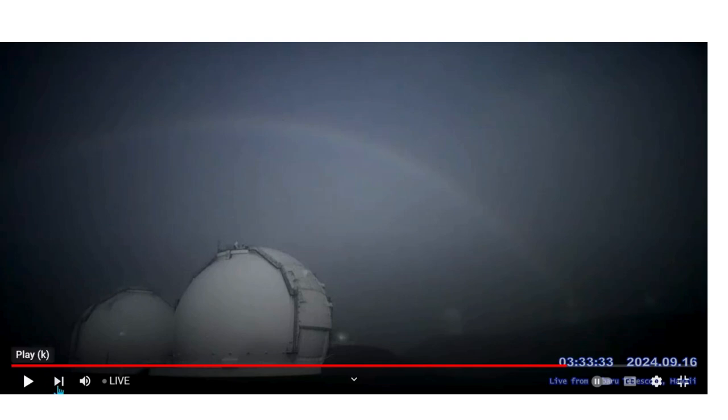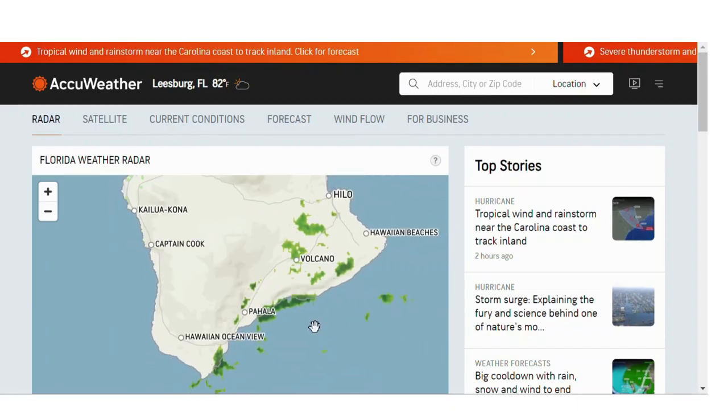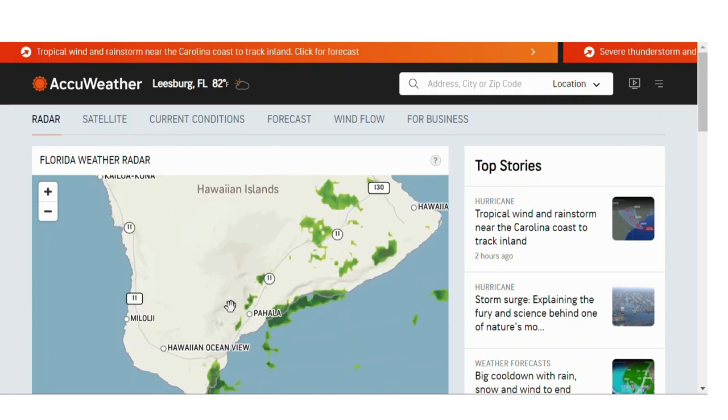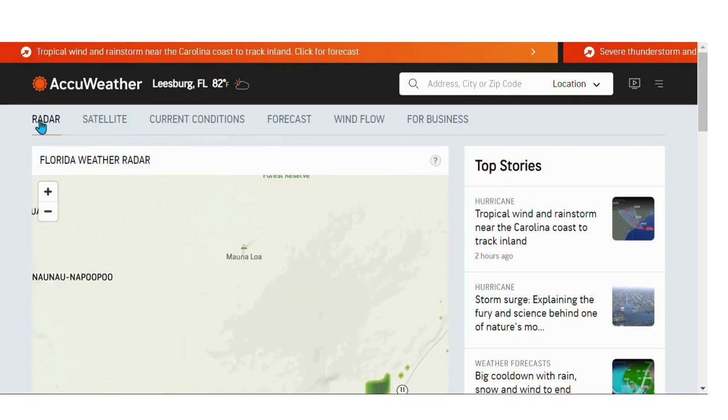Now we're going to check the weather in Hawaii. Hawaii's experiencing some rain by the volcano. Let's find it. Here's the site right here. Here's where we're looking at. Right here. These are where the observatories are located.